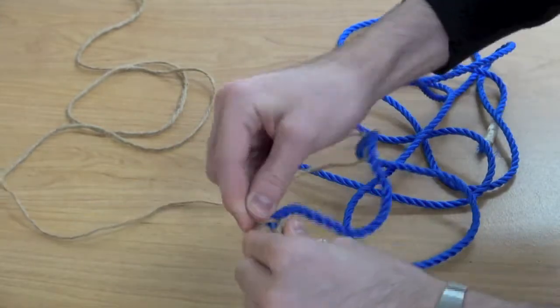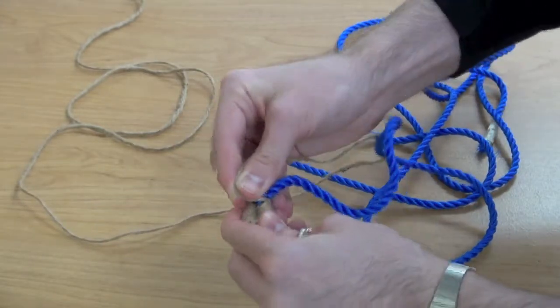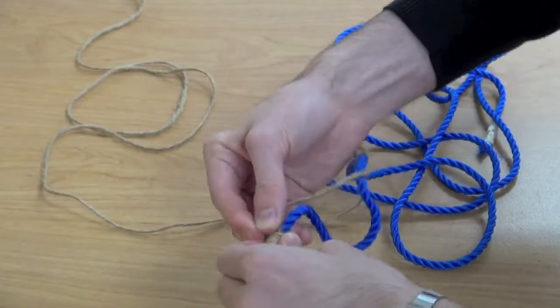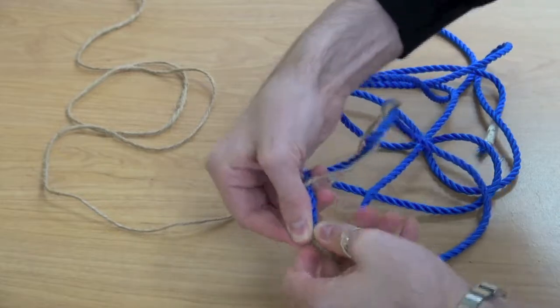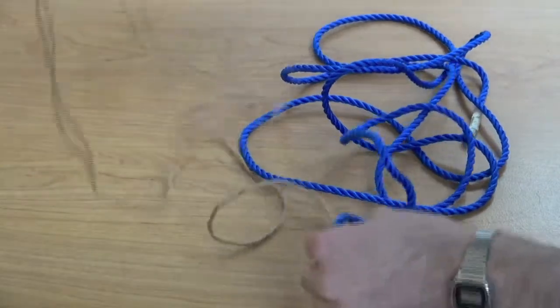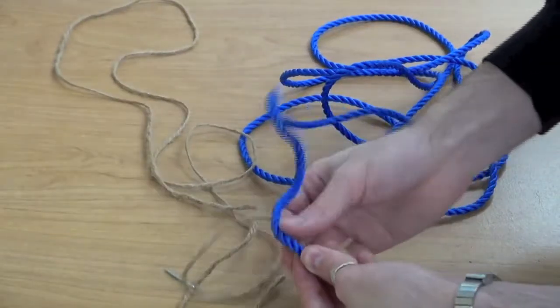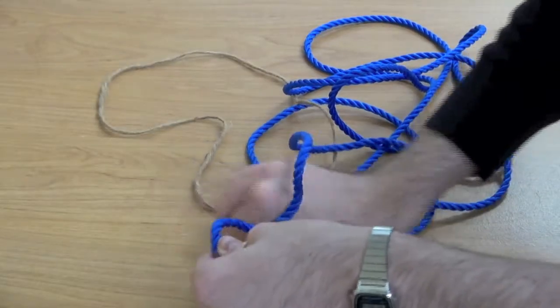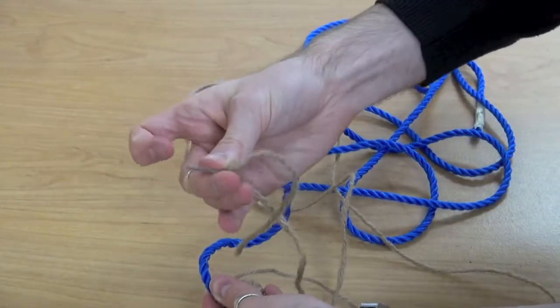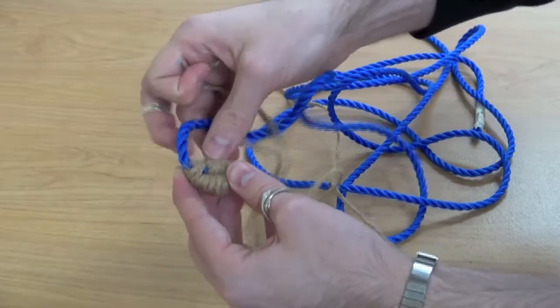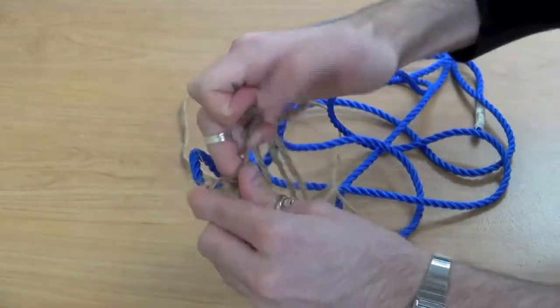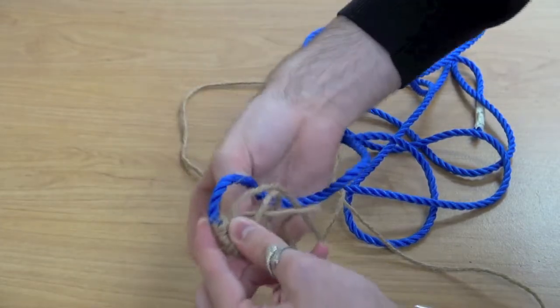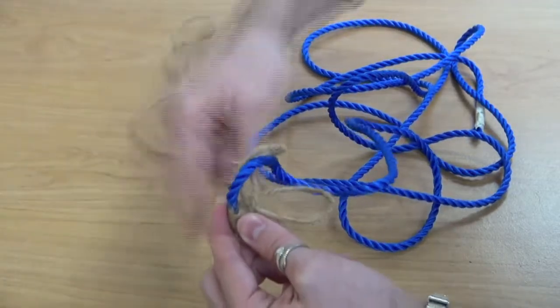Once you make this circle, you're going to want to continue to wrap your rope around it and make sure that it's nice and tight. Then you're going to take your needle, bring it under, and you're going to push it through the center. This will make sure that it's reinforced and will stay in place when we continue to wrap our coil.